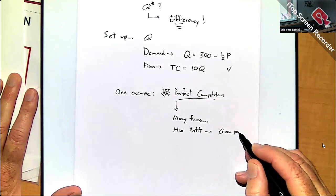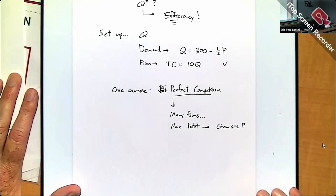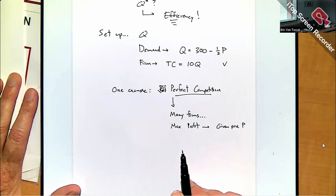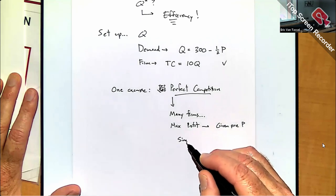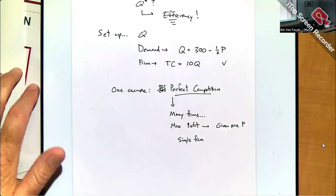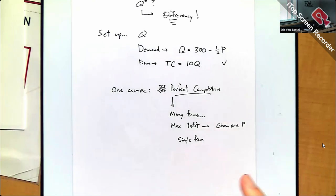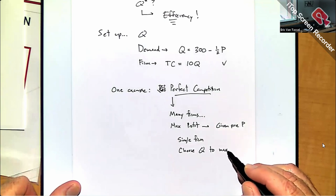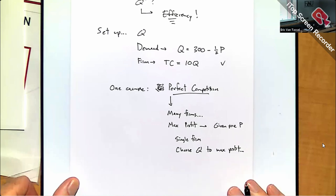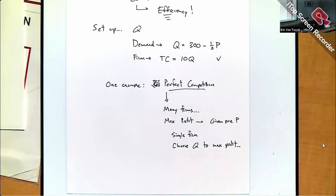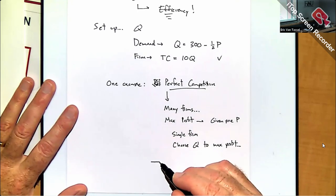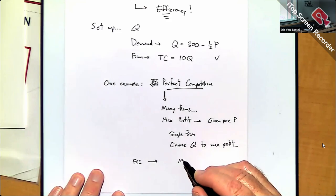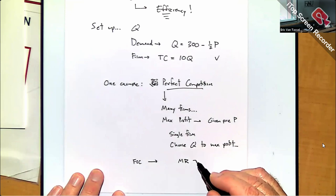In a perfectly competitive market, there's a market price that each firm takes as given — their own individual decisions have no impact on the market price. So a single representative firm is choosing output to maximize profit. When we maximize profit, we get the first-order condition where they pick a quantity such that marginal revenue equals marginal cost.